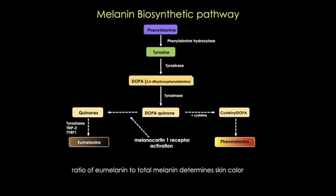People who produce mostly pheomelanin tend to have red or blonde hair, freckles, and light-colored skin that tans poorly. Melanins have important physiological functions, including protection of the skin from ultraviolet damage, inhibition of photocarcinogenesis, removal of reactive oxygen species, and effects on the synthesis of vitamin D.